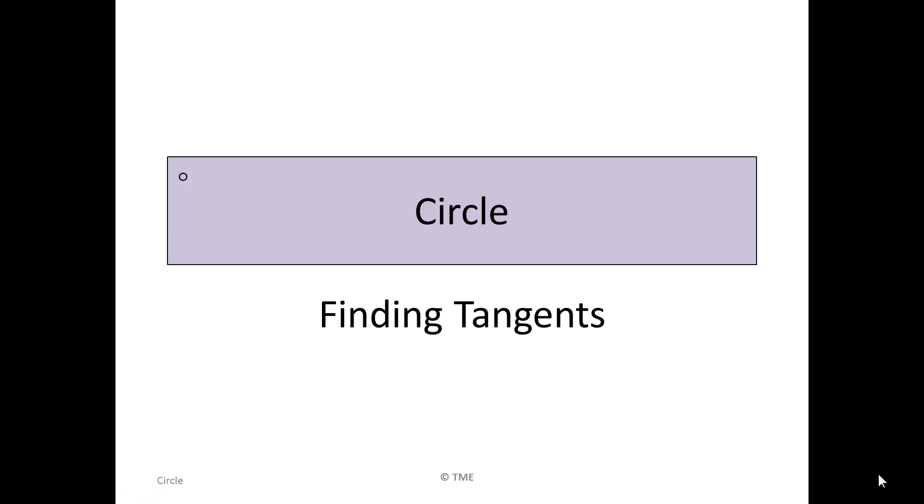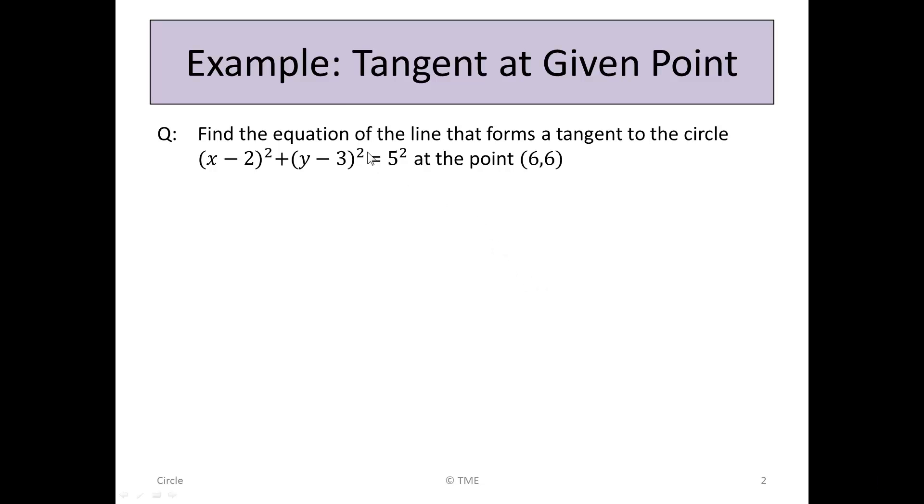Circles. Finding tangents. Find the equation of the line that forms a tangent to the circle (x - 2)² + (y - 3)² = 5² at the point (6, 6).